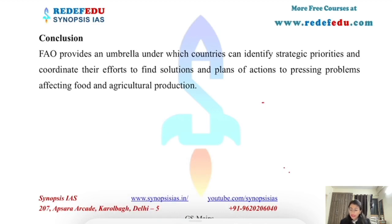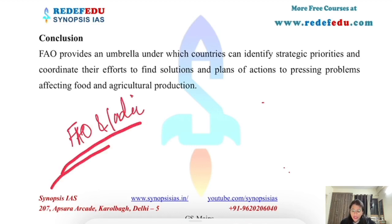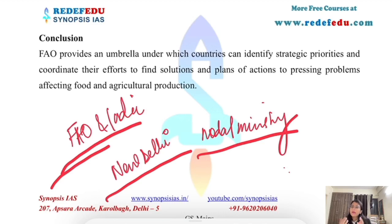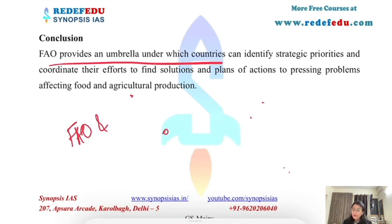Regarding FAO and India: the FAO headquarters in India is located in New Delhi. The nodal ministry responsible for implementing FAO programs and schemes in India is the Ministry of Agriculture. FAO has been operating in India since 1948 and cooperates with India on several programs in areas including livestock management, food insecurity, crop management, and fisheries. FAO provides an umbrella under which countries can identify strategic priorities and find solutions for sustainable development and inclusive growth.